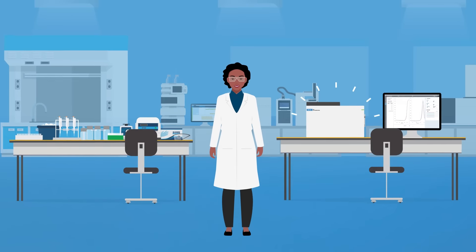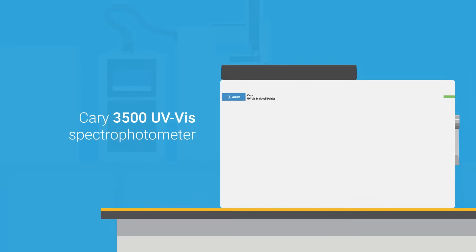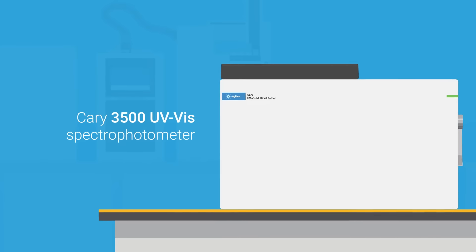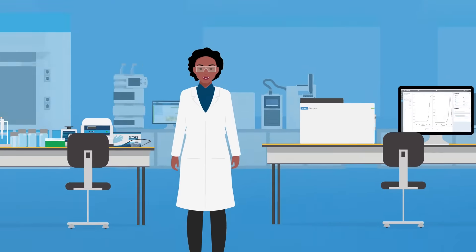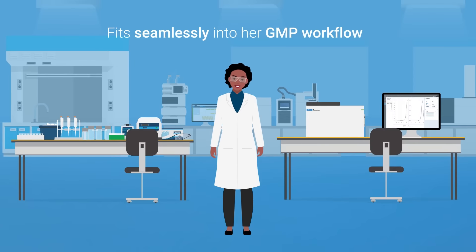Alice has found that using the Agilent Cary 3500 spectrophotometer allows her to complete her assay in just 10 minutes using reliable equipment that fits seamlessly into her GMP workflow.